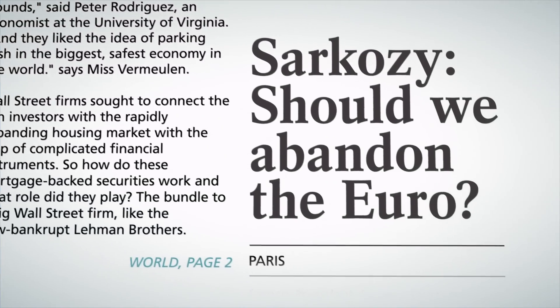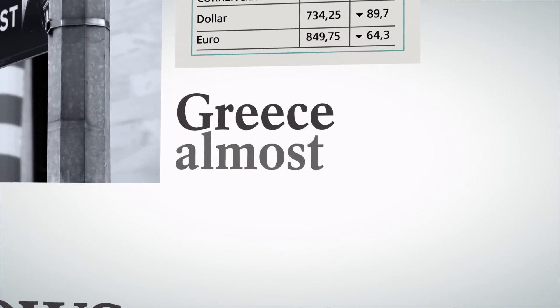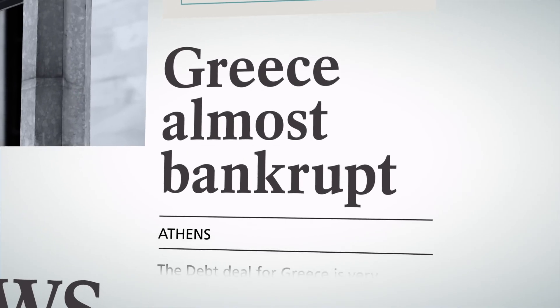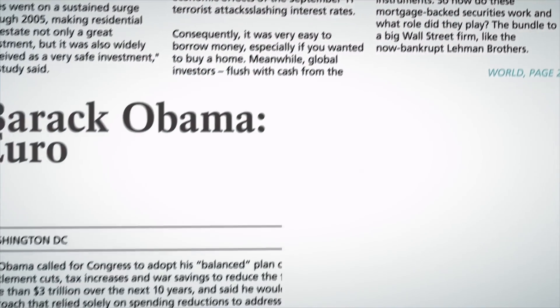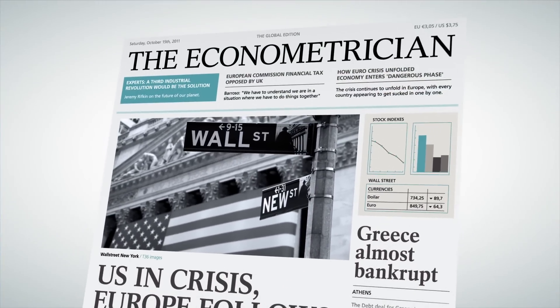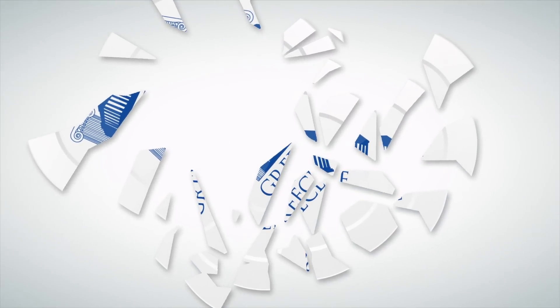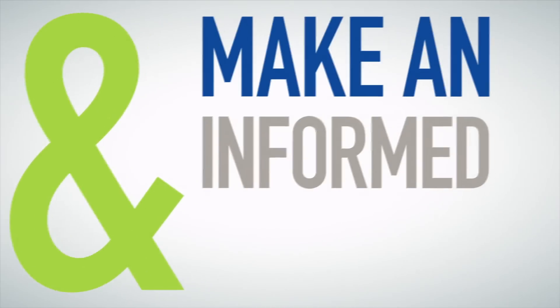Should we abandon the euro or should we keep it? Should we grant extra credit loans to Greece? Should we bail out investment banks or let them go bankrupt as a result of their own choices in the past? Often, politicians have clear opinions on these issues and present these opinions loud and clear. An econometrician, on the other hand, will try to predict the consequences of abandoning the euro, or Greece for that matter. And he will also try to predict what will happen if we don't. Then you, and politicians too, can base opinions on facts and make an informed decision.